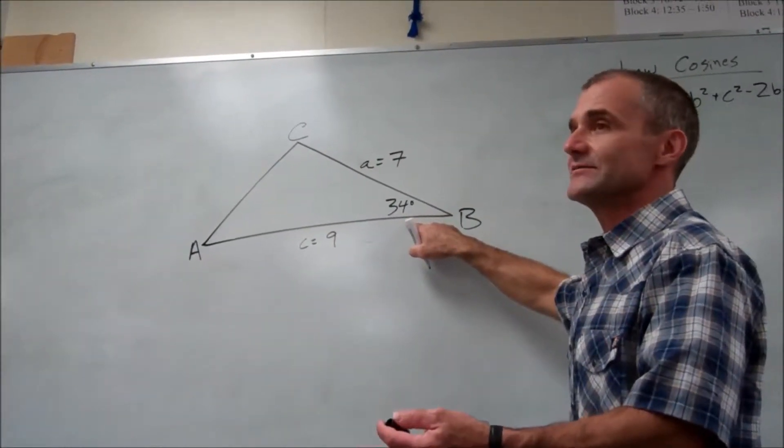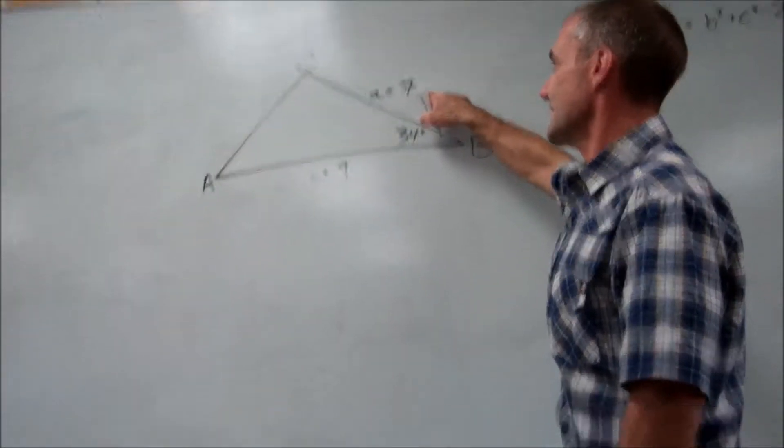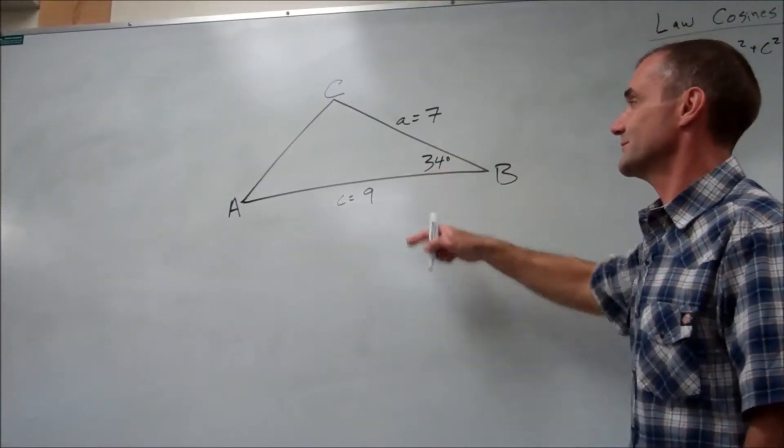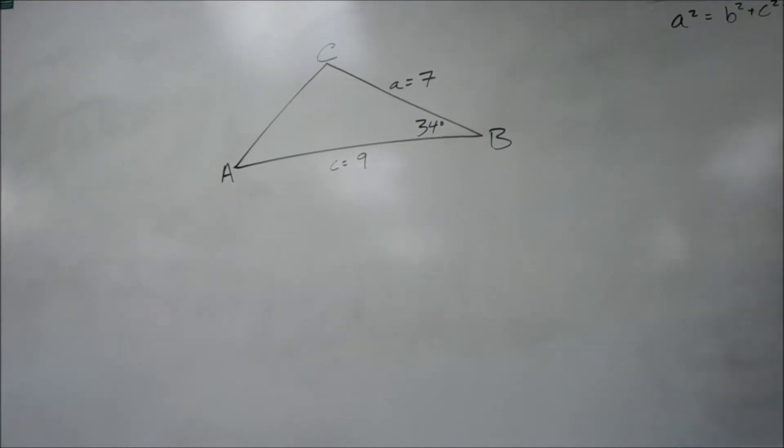So you want to identify the triangle first. You're given a side, an angle, and a side. And identifying is going to come into play later, but it's side, angle, side.